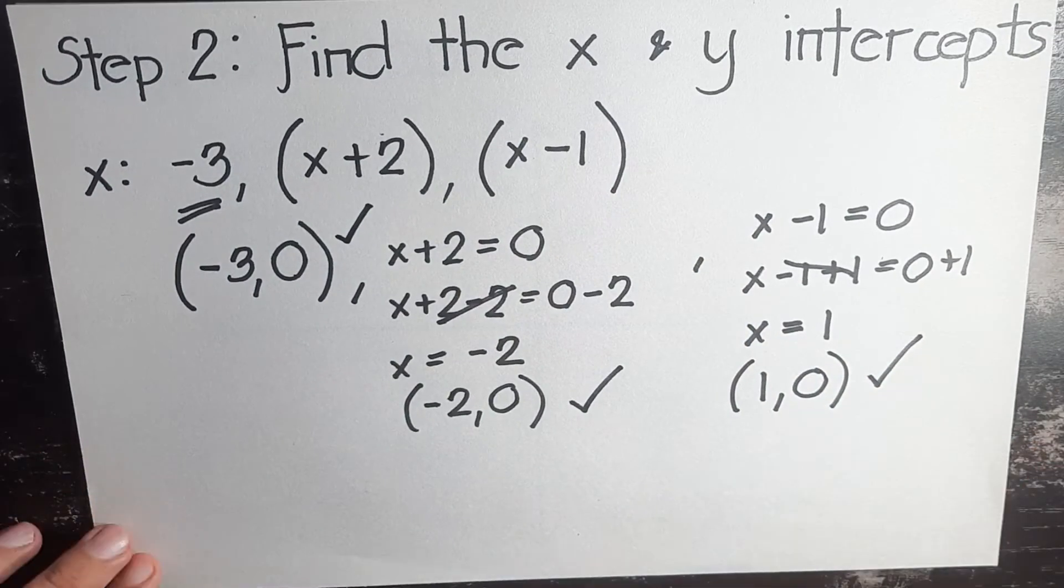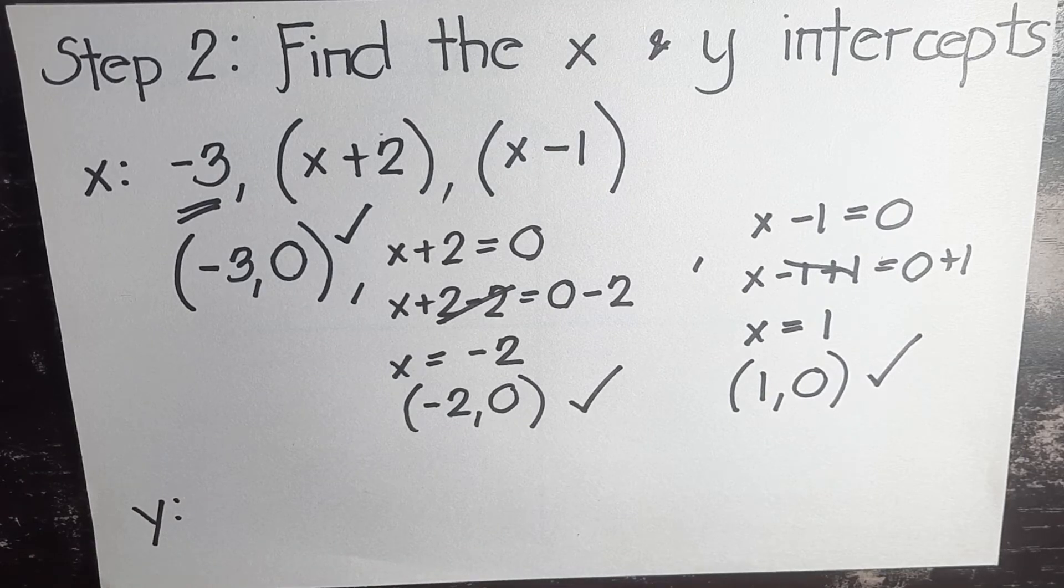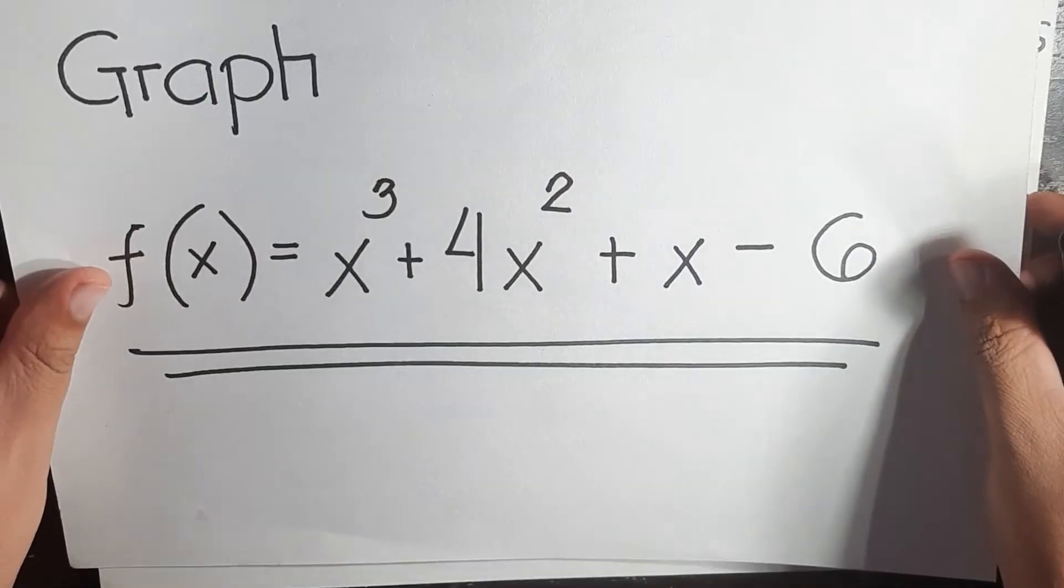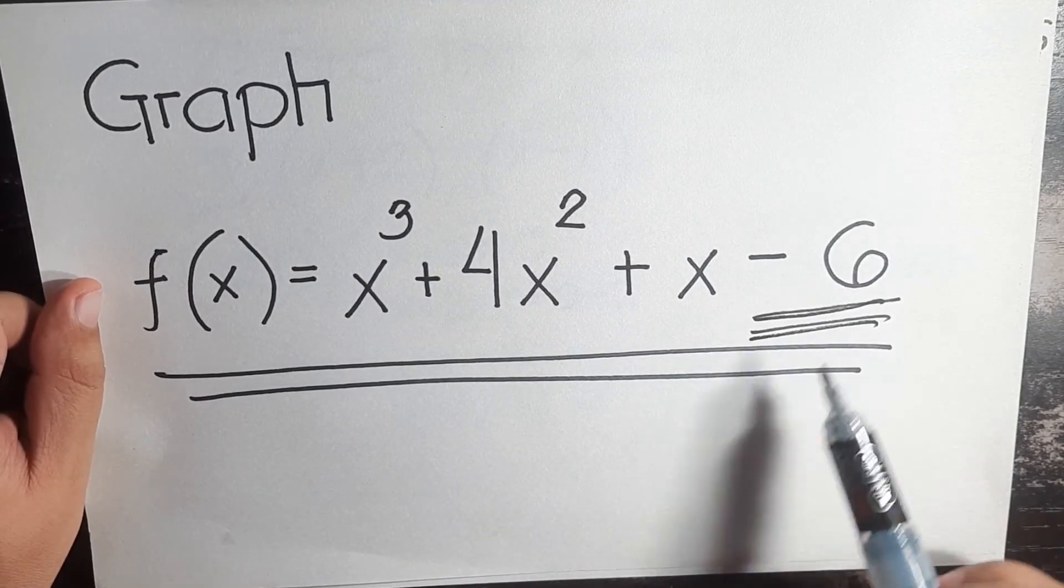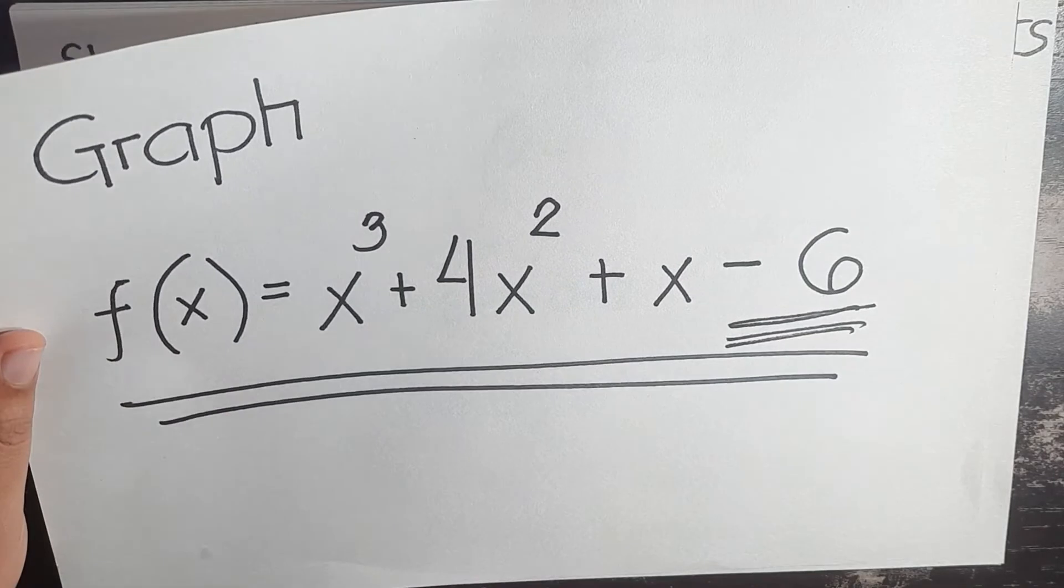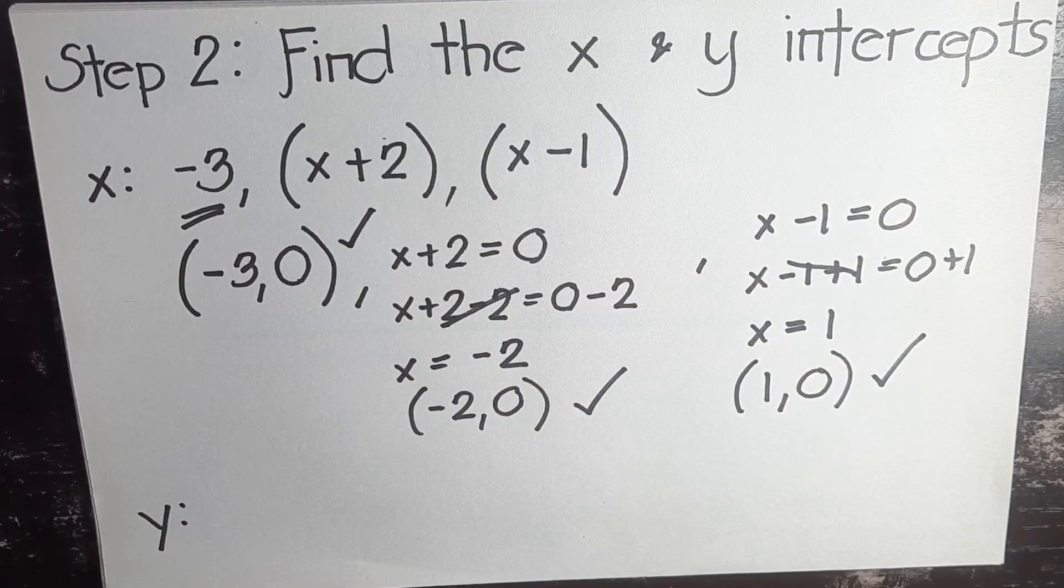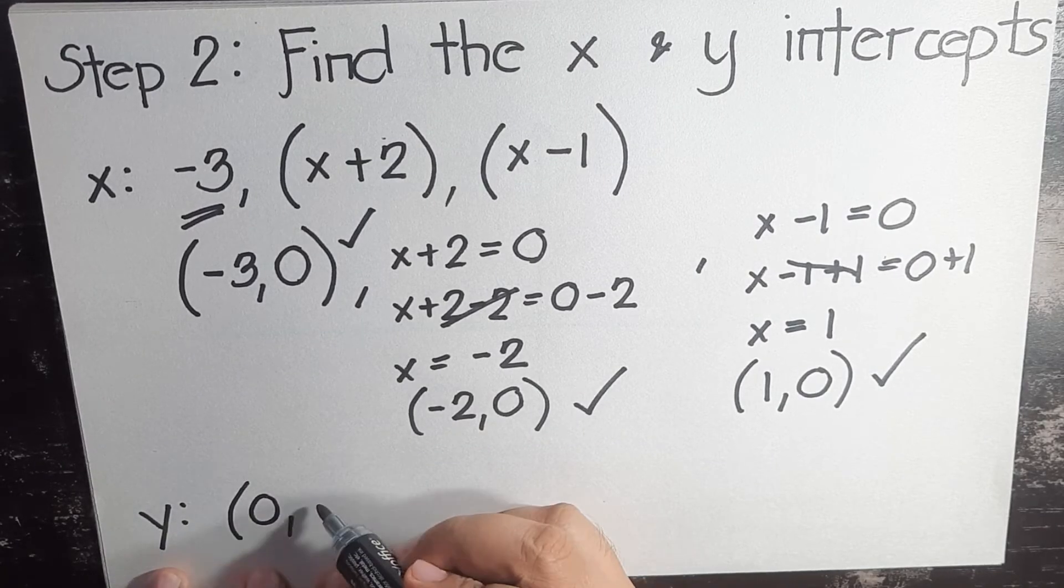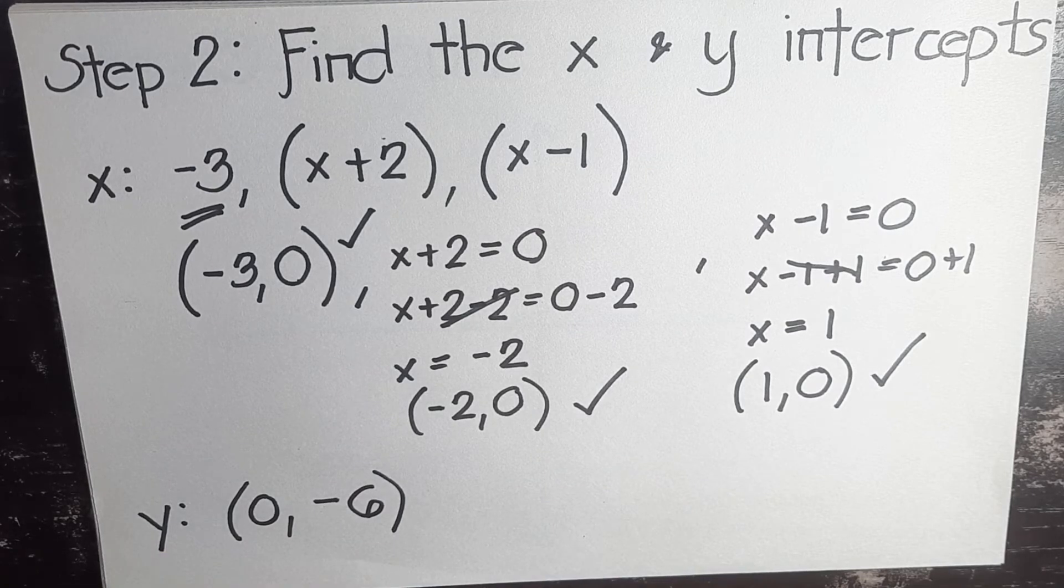What is our y-intercept? Our y-intercept is the constant that we have earlier in the given polynomial. If you remembered properly, our constant here is negative six, which is the value of our y. So this time, for the y-intercept, our x is zero, our y is negative six. Now that you already have all the required coordinates, let's proceed to graphing of the polynomials.